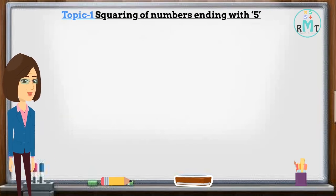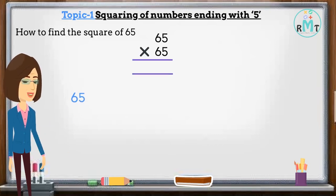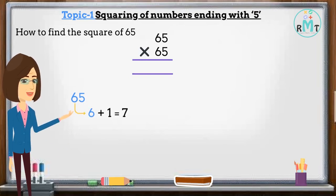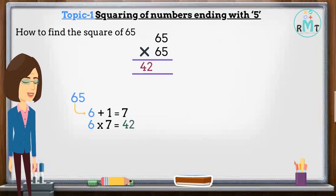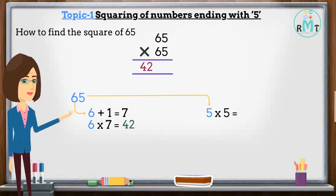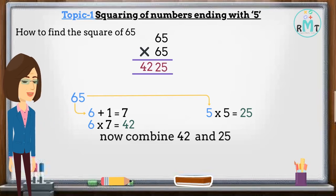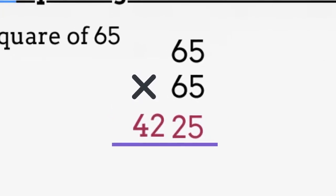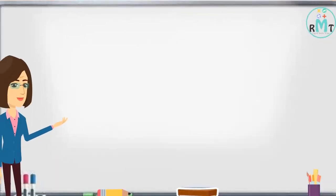How to find the square of 65. In 65, the number apart from 5 is 6. After 6 comes 7, so we multiply 6 by 7 and write down the answer 42. Next, we multiply the last digits: 5 multiplied by 5, and write down 25 to the right of 42. Now combine 42 and 25 to get 4225.